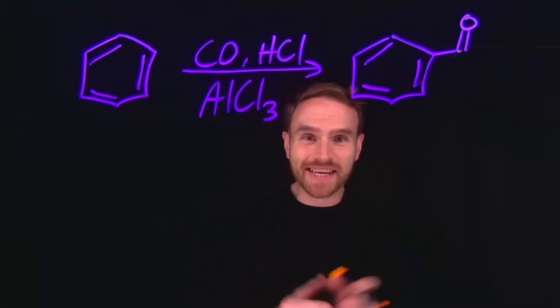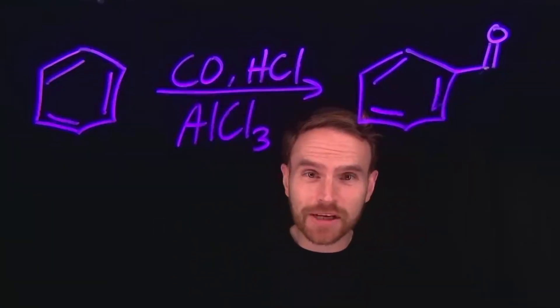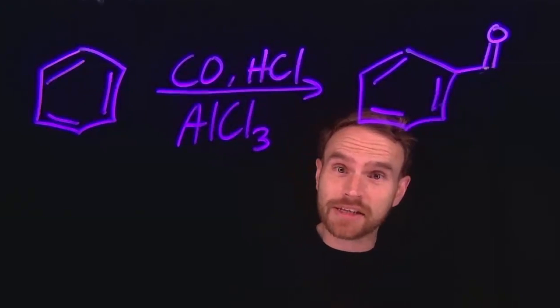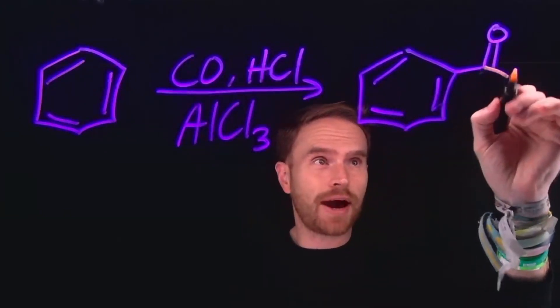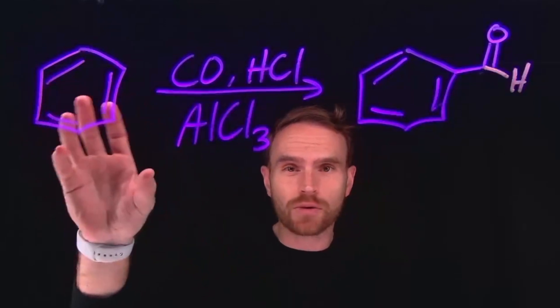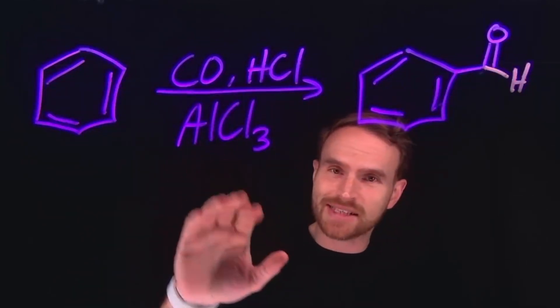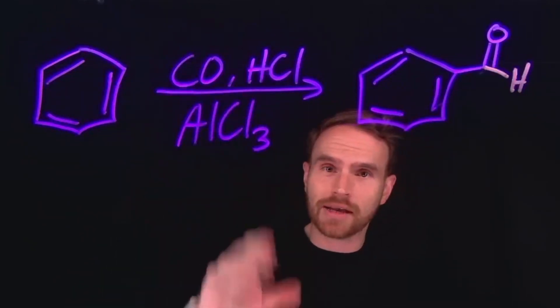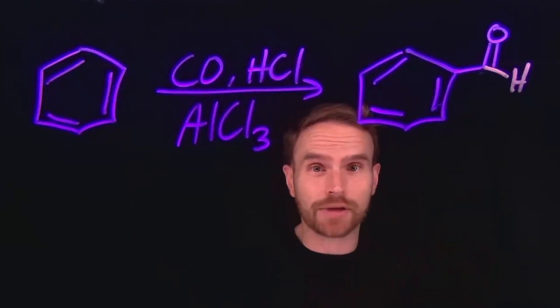This reaction is what's known as the Gatterman-Koch reaction. The Gatterman-Koch reaction is actually the way that industrially we make benzaldehyde. This molecule is called benzaldehyde, and we start with benzene. We use a Lewis acid catalyst, carbon monoxide, and hydrochloric acid to make benzaldehyde industrially.